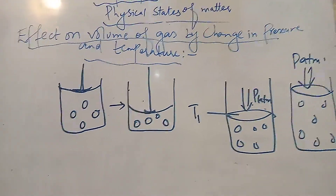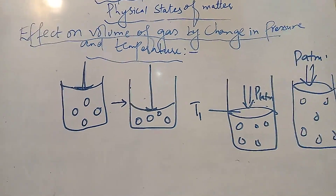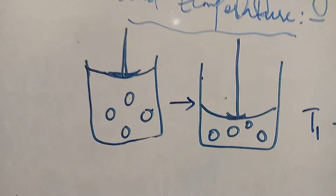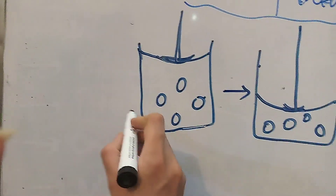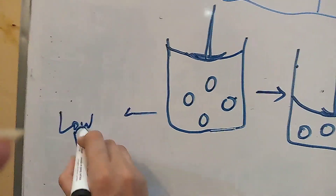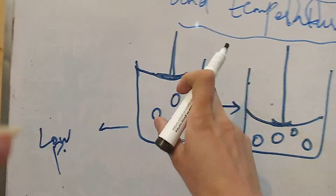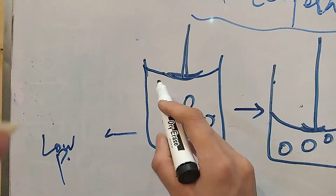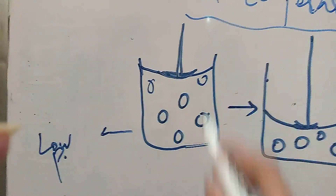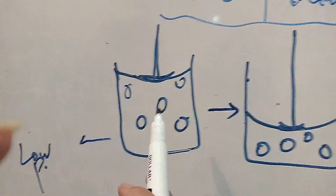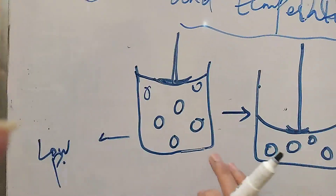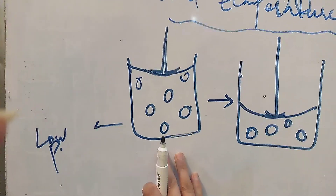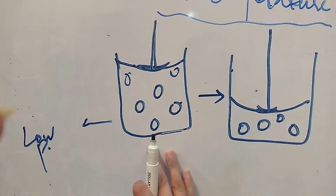Today we will see what will happen to the volume of the gas by change in pressure and temperature. In this container you can see gas particles at low pressure — this is a piston which we can press to apply pressure. When we have low pressure, the volume of the gas increases, and particles have less collisions per unit area.